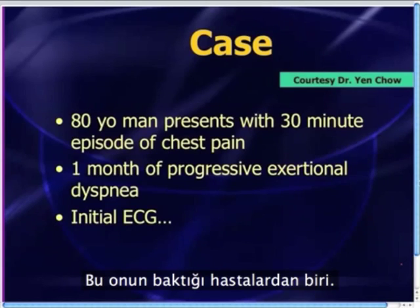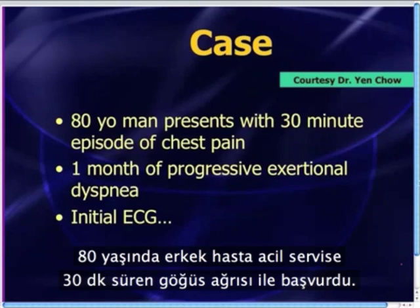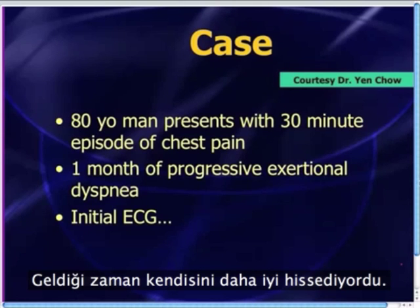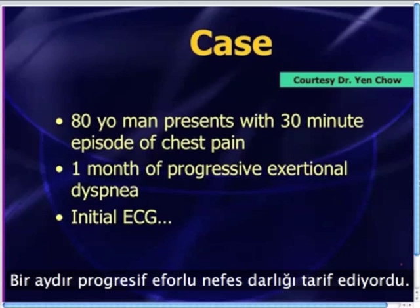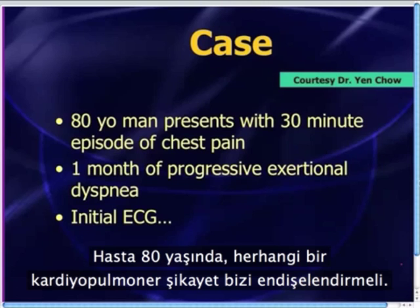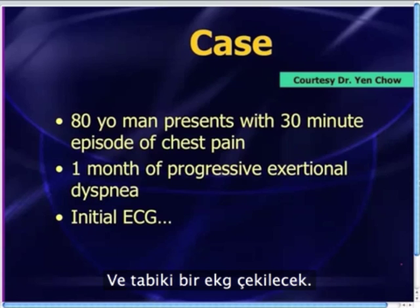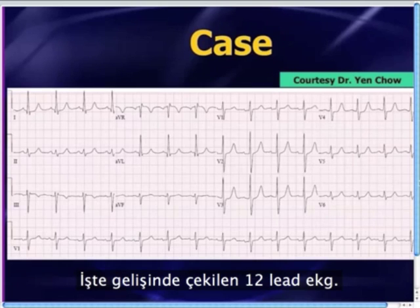So this was a patient that he took care of — an 80-year-old man who came into the emergency department complaining of a 30-minute episode of chest pain. By the time the patient arrived, he was feeling a lot better, and he reported a one-month history of progressive exertional shortness of breath. With practically any cardiopulmonary complaints in an 80-year-old, you've got to really worry, and you're going to get an EKG. And here is the initial 12-lead EKG.